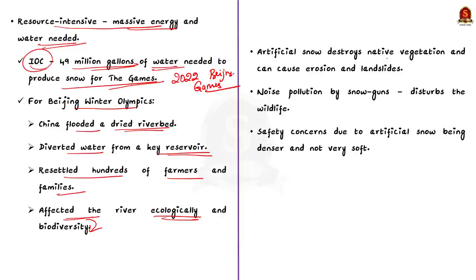Worryingly, artificial snow itself damages the environment because it destroys native vegetation and can cause erosion and landslides. Plus, the snow guns make a lot of noise. So, it leads to noise pollution which disturbs the nearby wildlife. Apart from all these, there is safety concern for athletes also because this artificial snow is much denser and not very soft like our natural light fluffy snow. So, this makes the game trickier and less safe. This is all about the news article here.